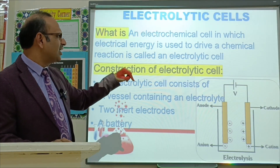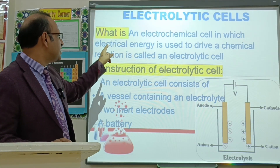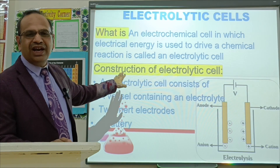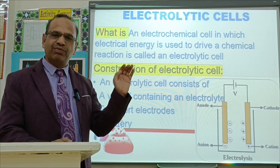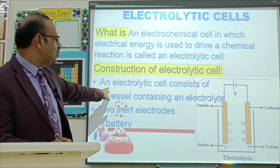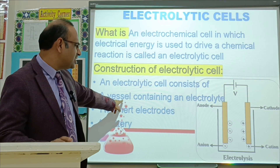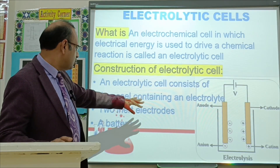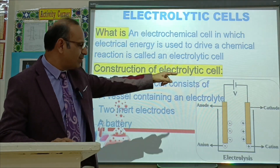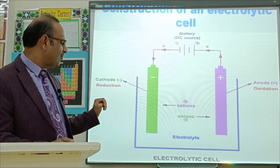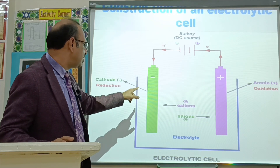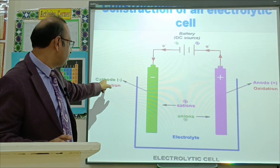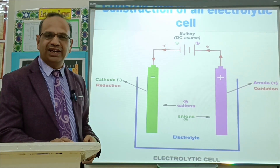Electrolytic cell: it is an electrochemical cell in which electrical energy is used to drive a chemical reaction. For the construction of an electrolytic cell, you must draw the diagram and write what the electrolyte is, which electrode is the anode, and which is the cathode. In an electrolytic cell there is one electrolytic solution, electrodes, and a battery. The electrode connected to the positive terminal of the battery is the anode; the other connected to the negative terminal is the cathode. The electrolyte contains cations and anions.